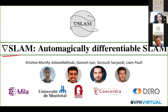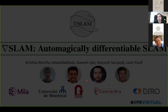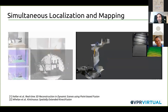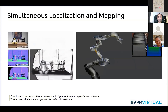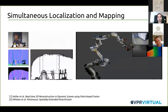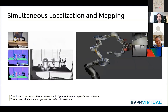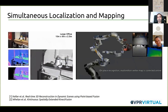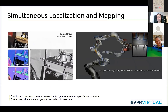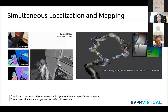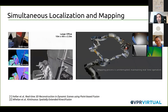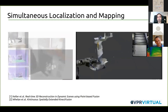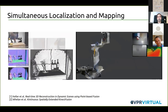Without further ado, I'll just get started. We're tackling the problem of SLAM, or simultaneous localization and mapping. This is a key problem in robotics, especially if you want robots to operate in previously unseen environments. SLAM has been traditionally the way this problem has been solved. In this particular paper, we're focusing on dense maps that are constructed from RGB-D cameras.